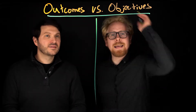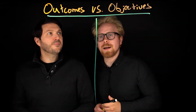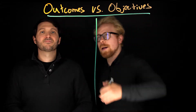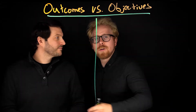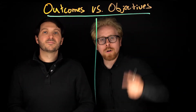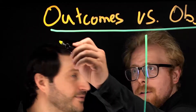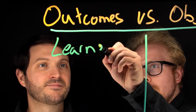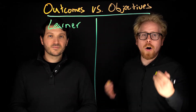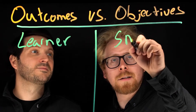So, outcomes versus e-learning objectives, or learning objectives — what's the difference? Outcomes are all about your learners; this is learner-focused. And objectives are all about your subject matter experts.